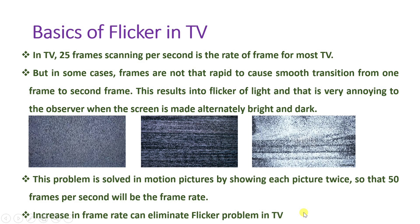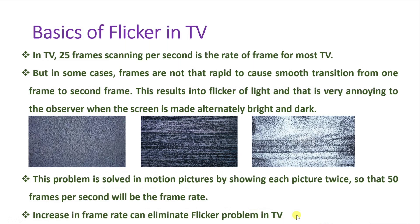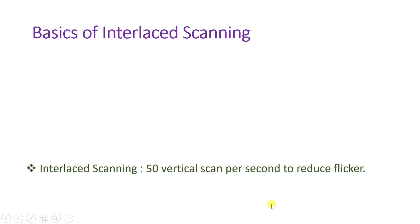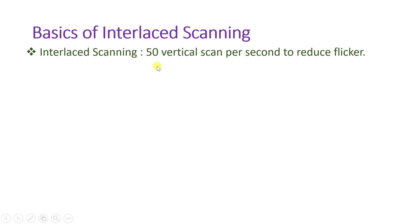This is referred to as interlace scanning — we are increasing the rate of frames. In interlace scanning we will have 50 vertical scans per second to reduce flicker. Flicker was happening when there were 25 vertical scans per second, but if we increase the frame rate by double to 50 vertical scans per second, we can eliminate flicker.